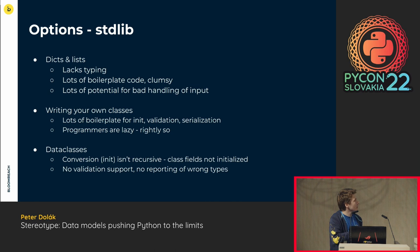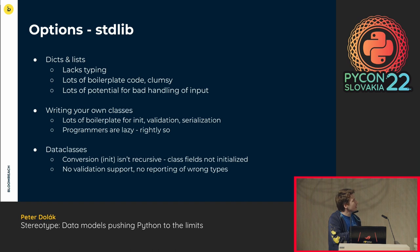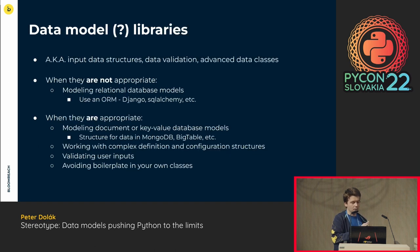One of the things that can help you with this is data classes. Data classes will basically write some of these methods for you, like init. An issue with data classes is that if we have some data which has a dictionary or a model within another field, it won't be initialized by itself. You have to do all this stuff yourself. And data classes have no support for validation — they don't even validate whether the data you've supplied in those fields has the right types. So, is there anything better we can do? Well, you can use some library. I'll call them data models, though I've also heard them called input data structures, data validation libraries, or advanced data classes.